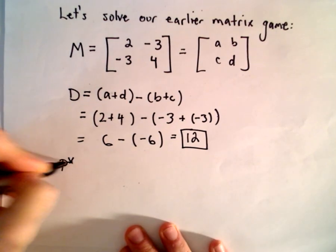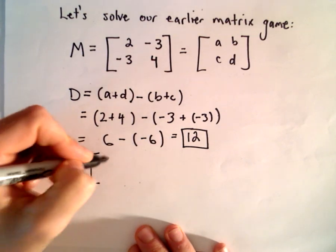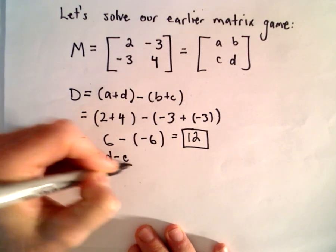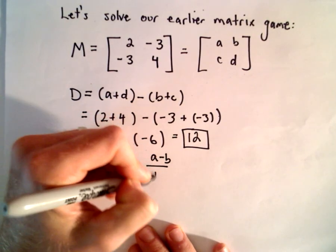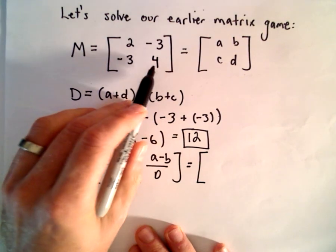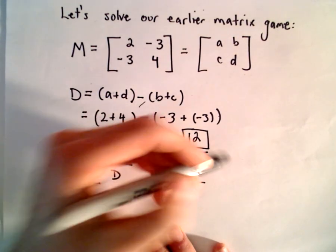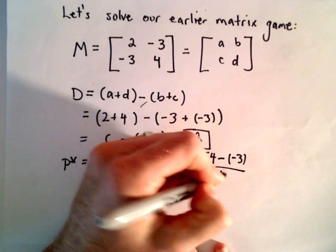And to get the value for P star, it says we take D minus C over capital D, and then we take A minus B over capital D. So if we simplify there, we would have 4 minus negative 3, so 4 minus negative 3 over 12.